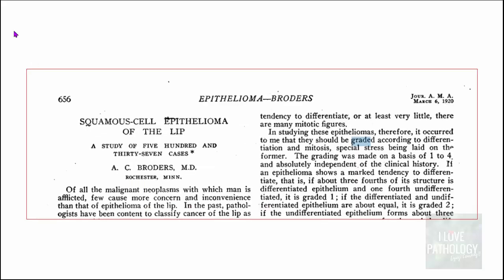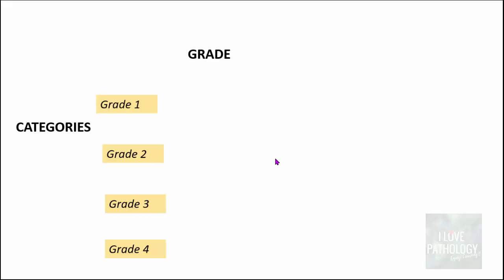Way back in 1920, an article from Broders devised a method to grade squamous cell carcinomas into four different grades. Based on that, most tumors are categorized into Grade 1, Grade 2, Grade 3, and Grade 4.